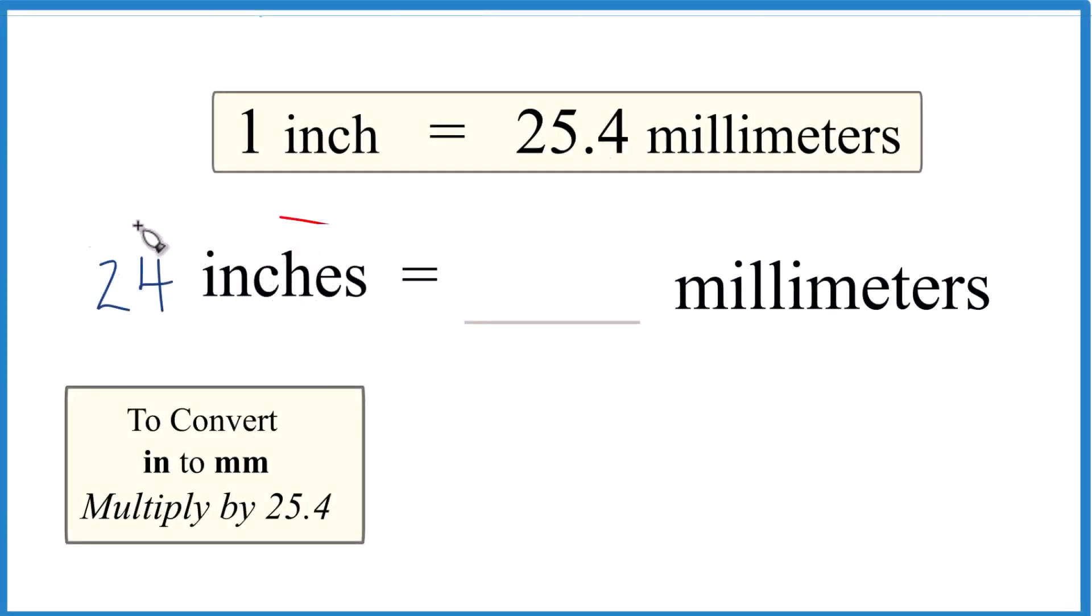If you're given 24 inches and you want to convert that to millimeters, here's how you do it. We know that one inch equals 25.4 millimeters.